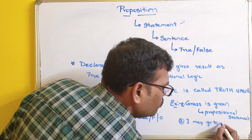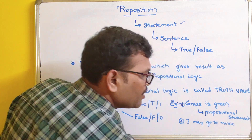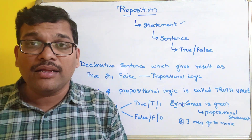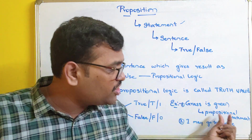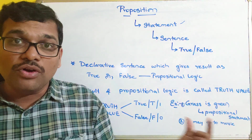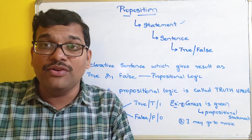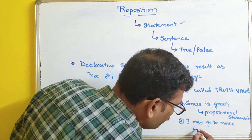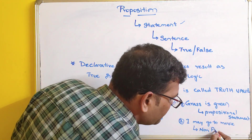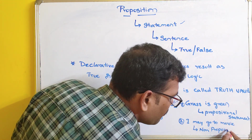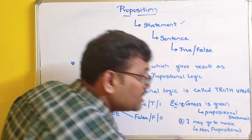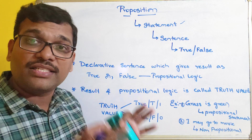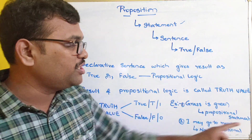Second example: 'I may go to movie.' This is also a sentence, but we have to decide whether it is a propositional statement or not. 'I may go to movie' — it doesn't give the result either true or false. So such type of statements we call as non-propositional statements. The statement which gives either true or false will only be called as a propositional statement.